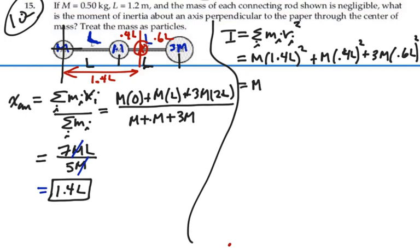So we've got m times 1.4 squared is 1.96l squared, and we have m times 0.4 squared is 0.16l squared, and 0.6 squared is 0.36 times 3 will give us m times 1.08l squared.